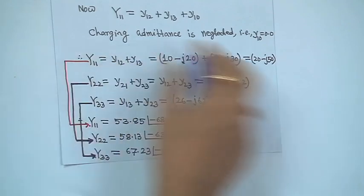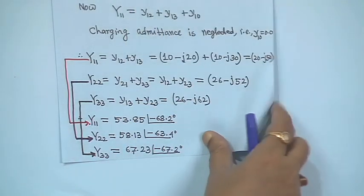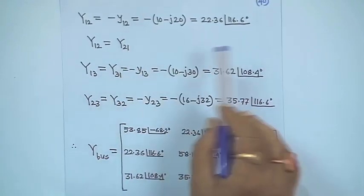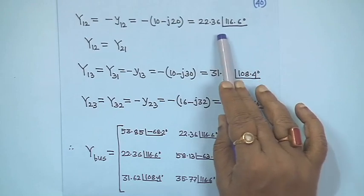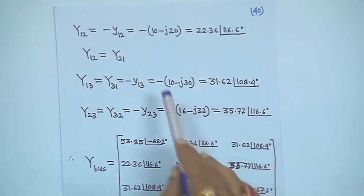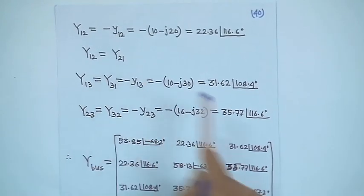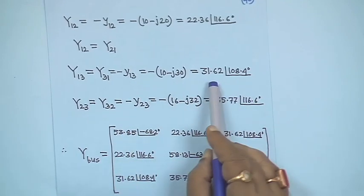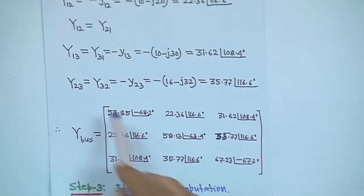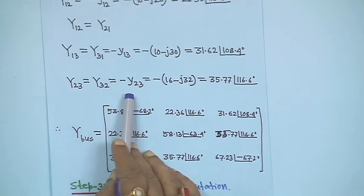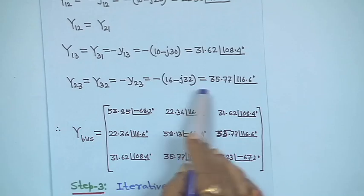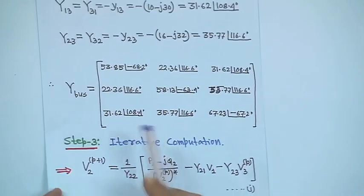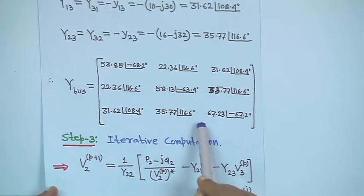The off-diagonal elements are the negatives of the line admittances. Capital Y12 = Y21 = −y12 = −(10−j20), giving 22.36 ∠116.6°. The matrix is symmetric. Y13 = Y31 = −y13 = −(10−j30), giving 31.62 ∠108.4°. Y23 = Y32 = −y23 = −(16−j32), giving 35.77 ∠116.6°. With these, the complete Y-bus matrix Y11, Y12, Y13, etc. is formed.